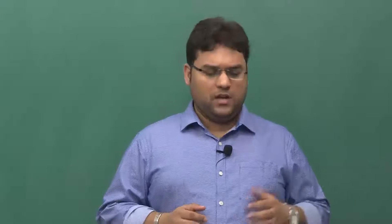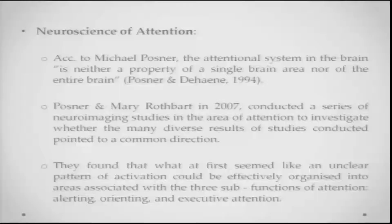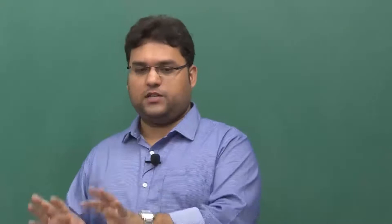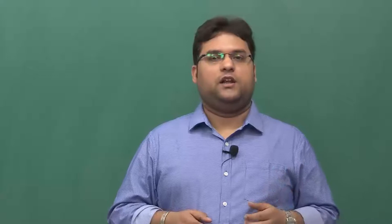Posner and Rothbart found that what at first seemed like an unclear pattern of results and findings could be effectively organized into areas associated with three sub-functions of attention. Looking at how the brain negotiates attention and which areas respond to various facets of attention, what looked like unclear activation over a distributed brain area can actually be effectively organized into three sub-functions: alerting, orienting, and executive attention.